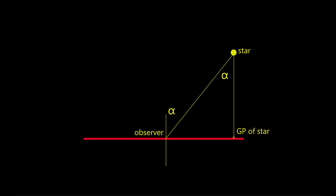The only way now to calculate the distance to the GP of the star is solving the triangle: the angle, observer, star, GP of the star.